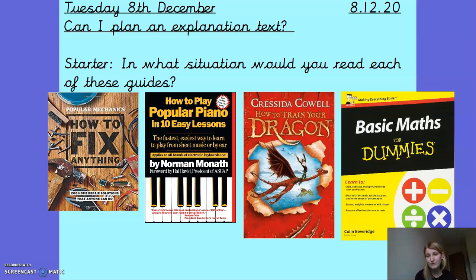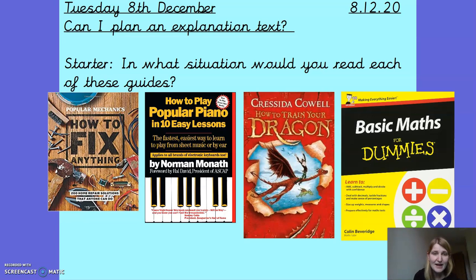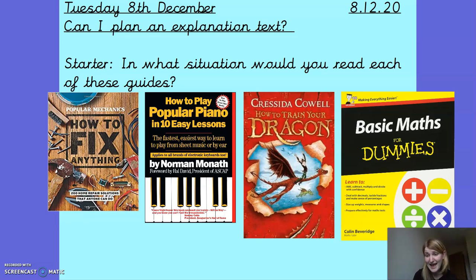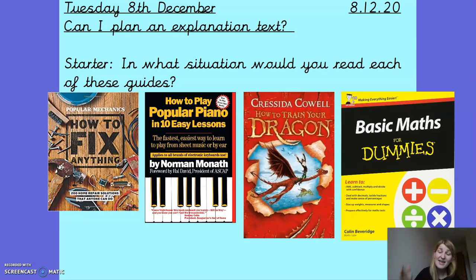If you look at my screen, you'll see I've got four different front covers from some different guides. I want you to pause and have a think about what situations you might read these guides in. Hopefully you've got the idea that if, for example, I was keen to learn how to play the piano, I might pick up 'How to Play Piano in 10 Easy Lessons.' If I had something broken and needed to repair it, I'd probably be reaching for the Popular Mechanics 'How to Fix Anything' guide. When it comes to guides or explanations, these are often targeted at readers that have a need — somebody wants to be able to do something, and these guides give them tips and steps to success about how they might achieve something.